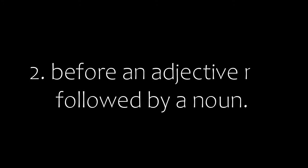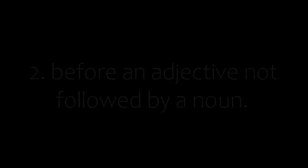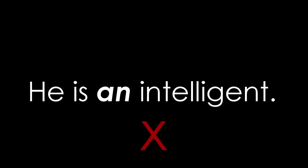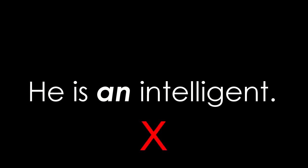Second, we do not use 'A' or 'AN' before an adjective that is not followed by a noun. For example, we cannot say 'He is an intelligent' — this is incorrect. When there is an adjective in the sentence but no noun following it, we can't use an article.